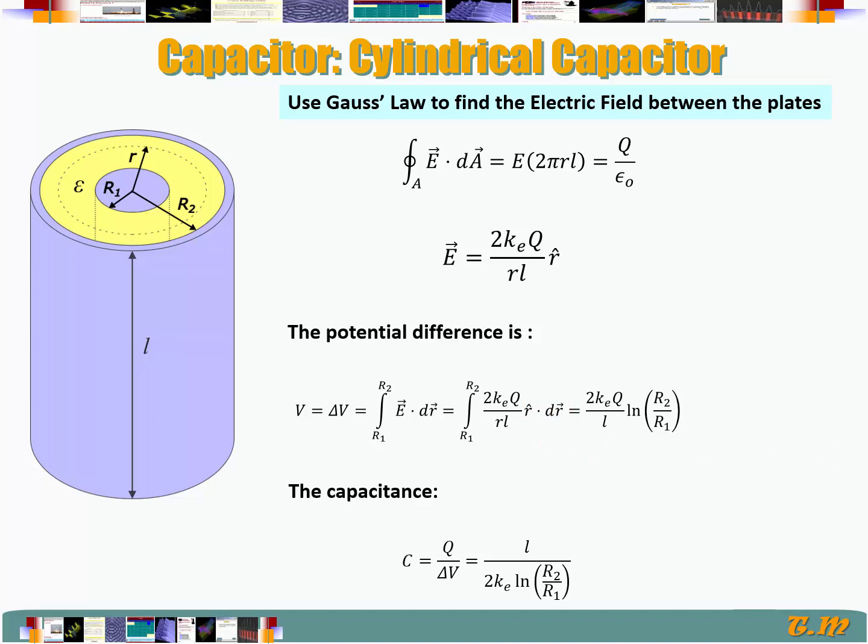Let me highlight all of these. All of these are constant, so we are left with just what's inside the integration, which is going to be dr over r, from r1 to r2. And that's going to be natural log of r, from r1 to r2.